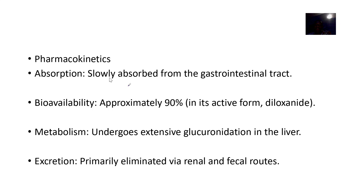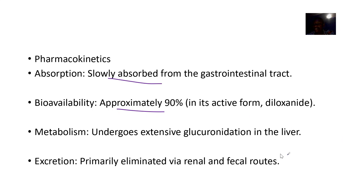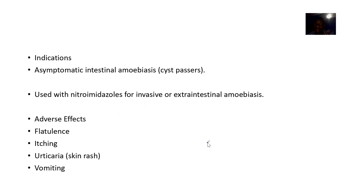Regarding pharmacokinetics, diloxanide furoate is slowly absorbed from the gastrointestinal tract. The bioavailability is 90%, mostly in its active form, diloxanide. Metabolism occurs via glucuronidation in the liver, and excretion is via the renal and other routes.